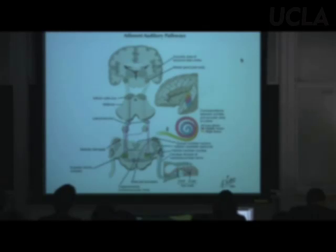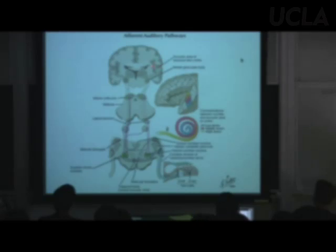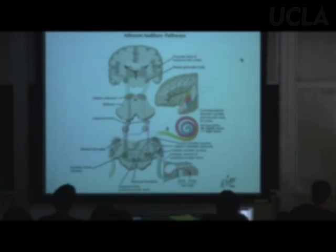Cell bodies of the medial geniculate nucleus send their axons up to the temporal lobe. Most of the auditory cortex is actually down inside the lateral (sylvian) fissure — cortex lining that fissure on its ventral side. The artist grabbed the temporal lobe and pulled it out to show us the auditory cortex on the dorsal side of the temporal lobe.